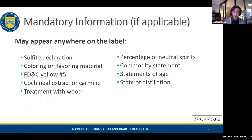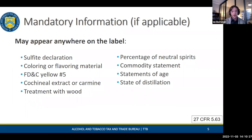We also have circumstantial requirements depending on your product type or specific ingredients. These include a sulfite declaration, coloring, flavoring material, FD&C Yellow Number 5 — which must be called out by name as it is an allergen — cochineal extract, carmine, and treatment of wood. For neutral spirits such as vodkas and gins, you'll need a percentage of neutral spirits statement. For blended whiskeys or brandies, same sort of deal. That ties into your commodity statement — distilled from grain or other base commodity. Statements of age are required for some specific products, and state of distillation for certain whiskeys.